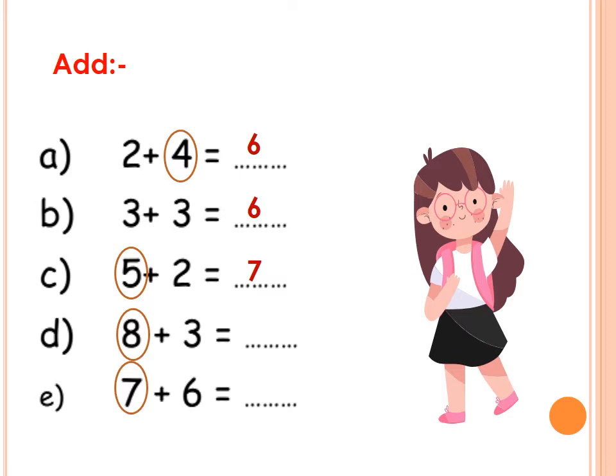8 plus 3: put 8 in your mind and raise 3 fingers. After 8: 9, 10, 11. Then 7 plus 6: put 7 in your mind and raise 6 fingers. After 7: 8, 9, 10, 11, 12, 13. And here is 13. Excellent, Primary 2. Clap your hands for yourselves.